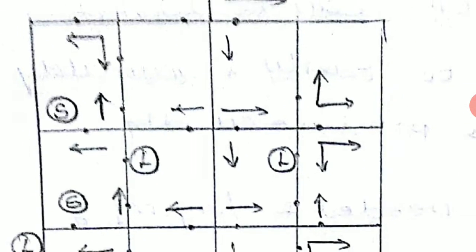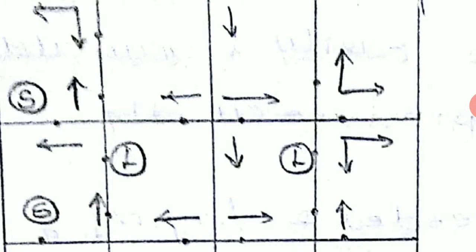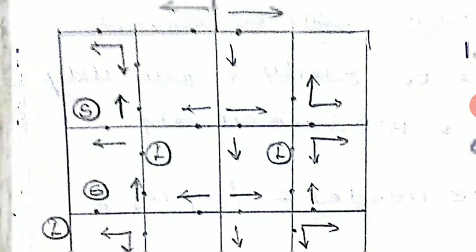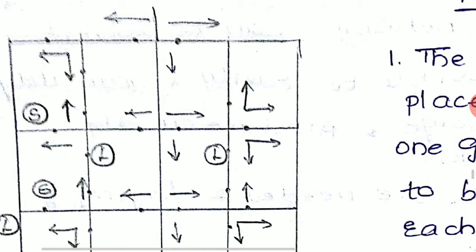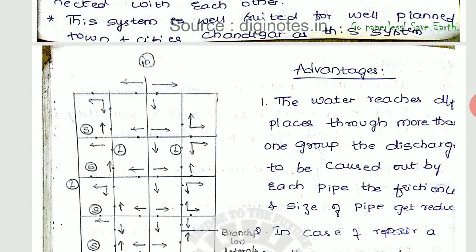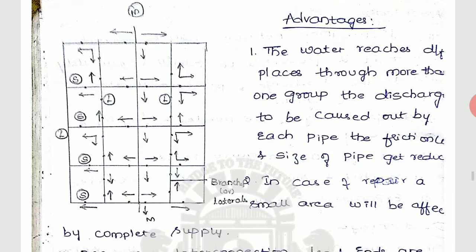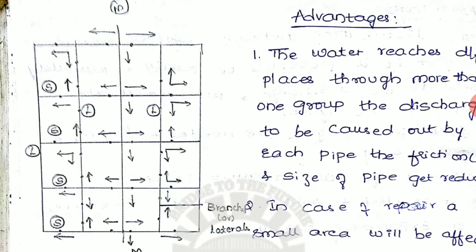That's why if any repair, at the time of repairs, you can take the water from another connection. That is, if you find the repair in the sub-main pipeline, you will get the water from the lateral pipeline. This is how the water will be supplied in the grid type of the system.